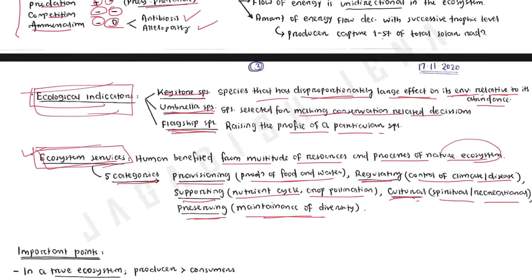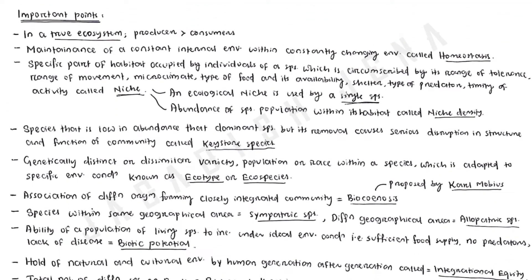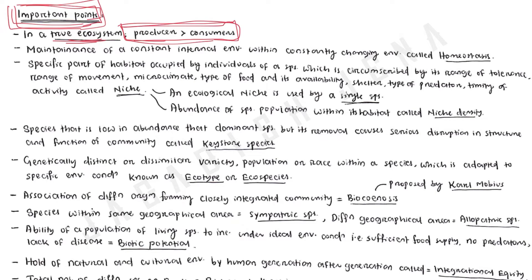These were some important points from ecology and ecosystem. From an exam point of view: in a true ecosystem, the producer is always greater than the consumer — the number or biomass of producers is always greater than consumers. Maintenance of a constant internal environment within a constantly changing environment is called homeostasis. If any organism can maintain its internal environment despite external changes, that process is known as homeostasis.